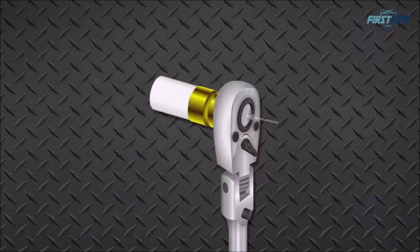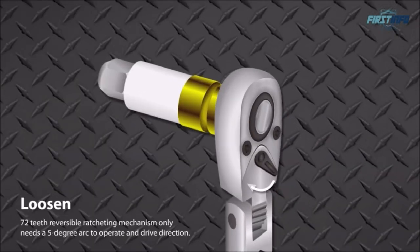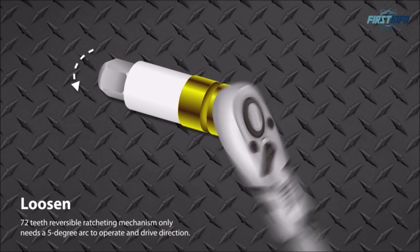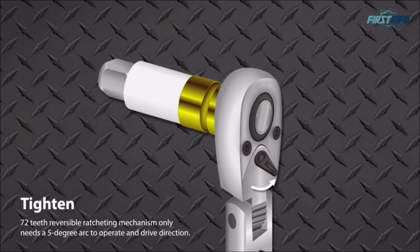A quick-release button on the back of the ratchet head allows effortless socket removal. 72-tooth reversible ratcheting mechanism that only needs a 5-degree arc to operate and drive direction. Each ratchet has a Comfort Grip chemical-resistant handle made with TPR rubber over mold.